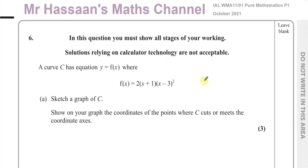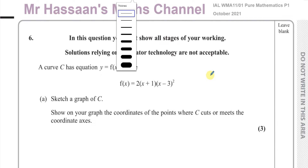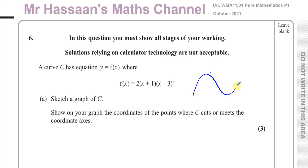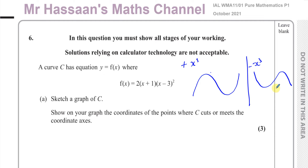Cubic curves have the basic shape either going up and up — that's when the x cubed has a positive coefficient — or a shape that goes the other way when x cubed has a negative coefficient. We can see that if we expanded this, the x cubed will have a positive coefficient, so we know it's going to have the up-and-up type of shape.